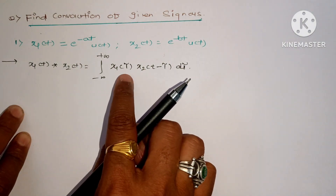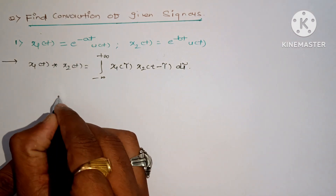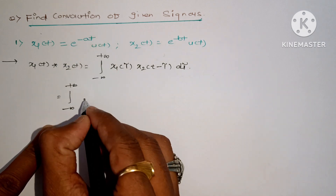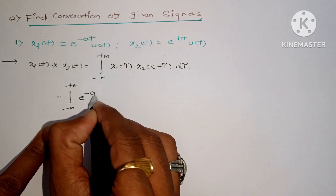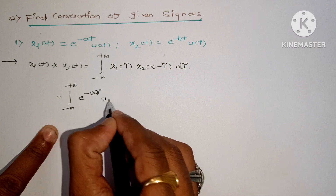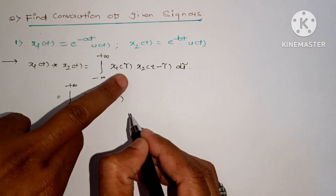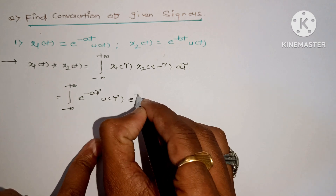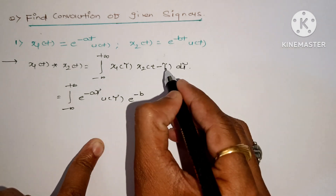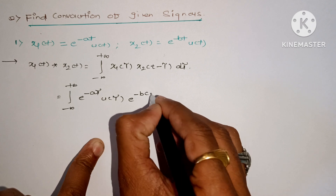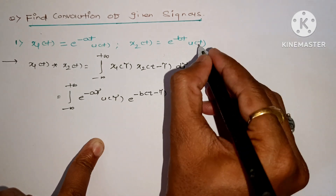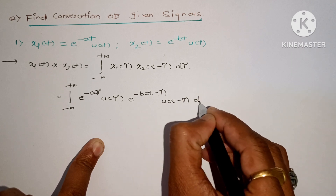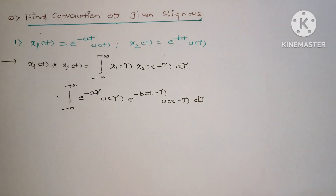If we talk about x1(τ), it will be a function as an integration: e raised to minus a times τ, multiplied by u(τ). The variable t is replaced by τ. For the second function, e raised to minus b, with t replaced by t minus τ — that is, e raised to minus b(t minus τ), multiplied by u(t minus τ).